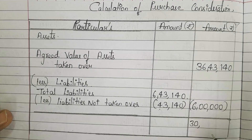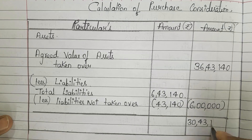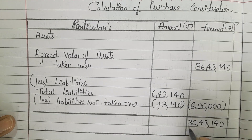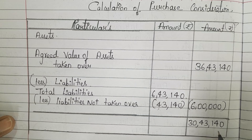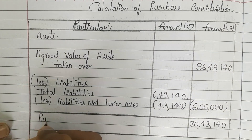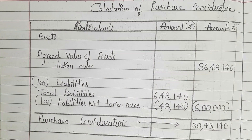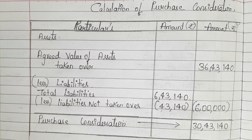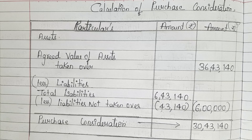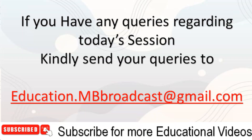When you subtract 43,140 from 6,43,140, you get 6,00,000 — giving liabilities taken over of 6,00,000. Subtracting that from the agreed value gives 30,43,140. This 30,43,140 is the purchase consideration. Hope you have understood. The notes and question are in the first comment — kindly download and study. Thank you. For any queries, send to education.mbbroadcast@gmail.com.